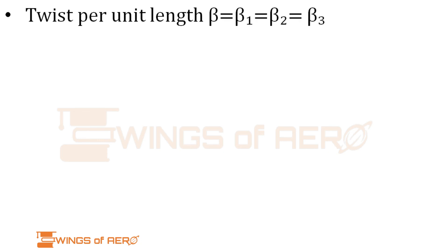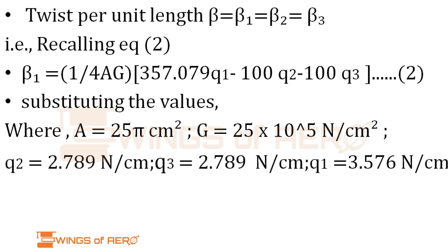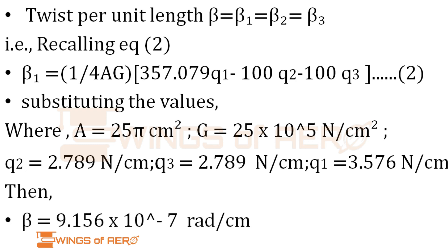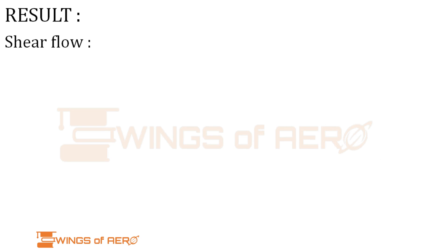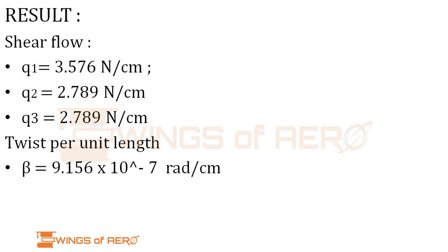Now we find the twist per unit length β = β1 = β2 = β3. Using Equation 2 (β1) and substituting the values of A, G, Q1, Q2, and Q3, we get β = 9.156 × 10⁻⁷ rad/cm. The unit is radian per centimeter because it is twist per unit length. Final results: Q1 = 3.576 N/cm, Q2 = Q3 = 2.789 N/cm, and β = 9.156 × 10⁻⁷ rad/cm.